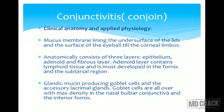Conjunctivitis is the third important topic in lids and adnexa. The word conjunctiva comes from 'conjoint' because it joins the lid and the globe. It is a mucous membrane lining the undersurface of the lids and the surface of the eyeball to the corneal limbus. Anatomically it consists of three layers: the epithelium, the adenoid, and the fibrous. The adenoid layer contains lymphatic tissue, most developed in the fornices and the subtarsal region.